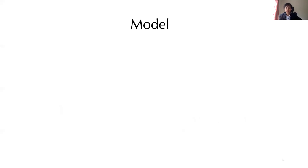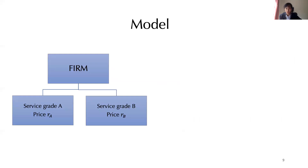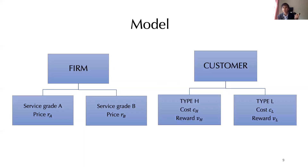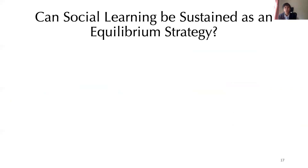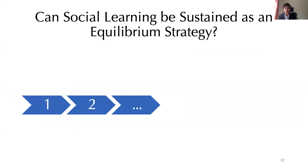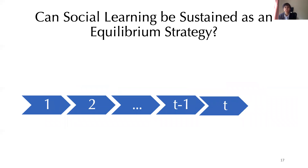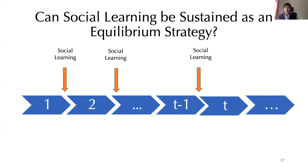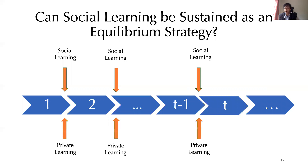We will answer these questions via the following model. We consider a firm providing service in grades A and B, priced differently, serving customers of two types — the high type and the low type — who differ in their cost of service and the reward they obtain upon completion. For the first half of the talk, I consider that at every period customers use social information for decision making. In the second half, we investigate if social learning can be sustained as an equilibrium strategy — that is, if at the beginning of each period customers have the choice between social and private learning, which one do they opt for? If at every period they opt for social learning, then social learning would emerge as an equilibrium strategy.